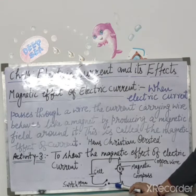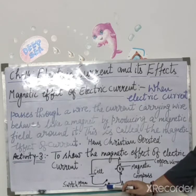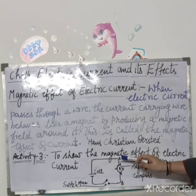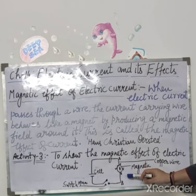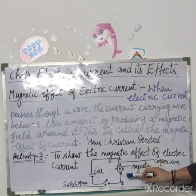Close the switch so that an electric current passes through the wire AB. What happens to the magnetic needle? Pehle ham log switch ko close kar denge, aur phir yeh jo magnetic compass hai iski needle mein kya changes aayenge, yeh ham log dekhenge.